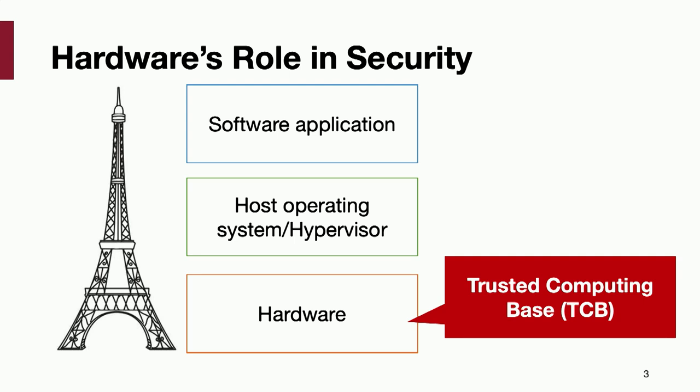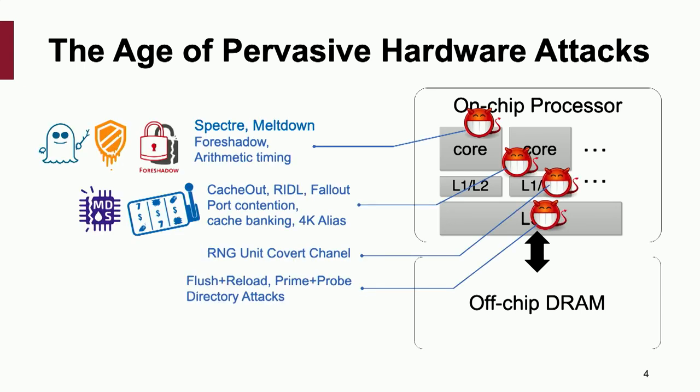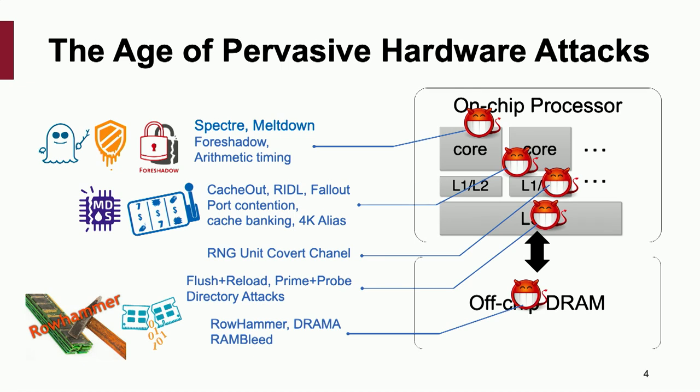So basically, even if you have all your applications fully verified using formal tools, you still need to make sure your hardware is secure to ensure the whole system doesn't leak secrets or tamper with integrity. Unfortunately, we are entering the age of pervasive hardware attacks. Almost every microarchitecture structure has been exploited to leak data or tamper integrity — such as Spectre and Meltdown. We also have Rowhammer attacks, which randomly flip bits in DRAM.